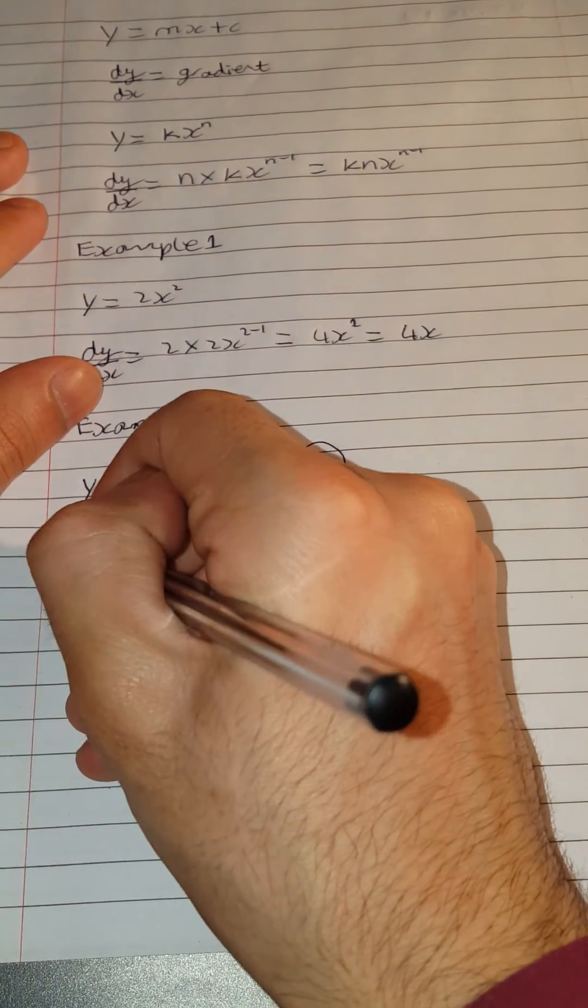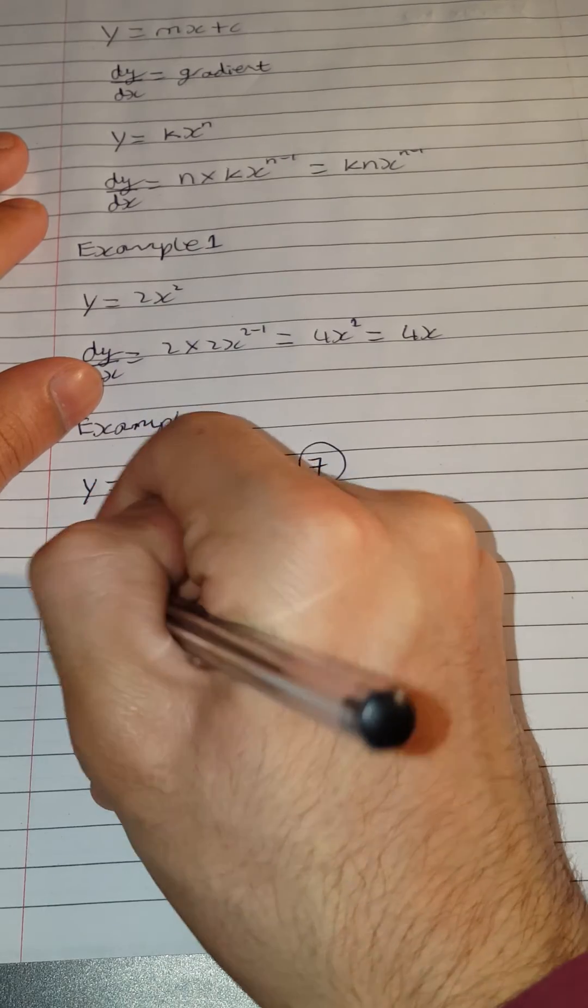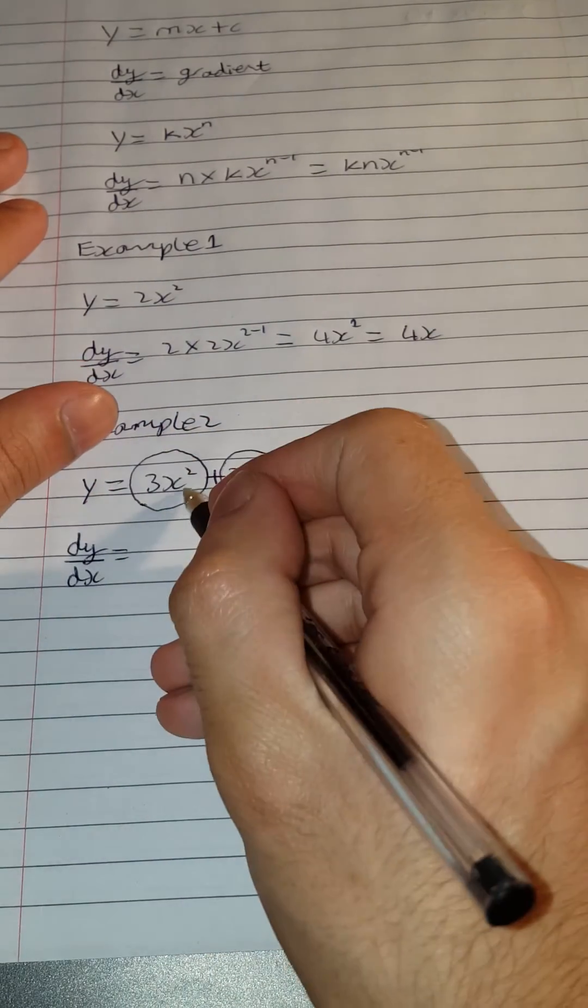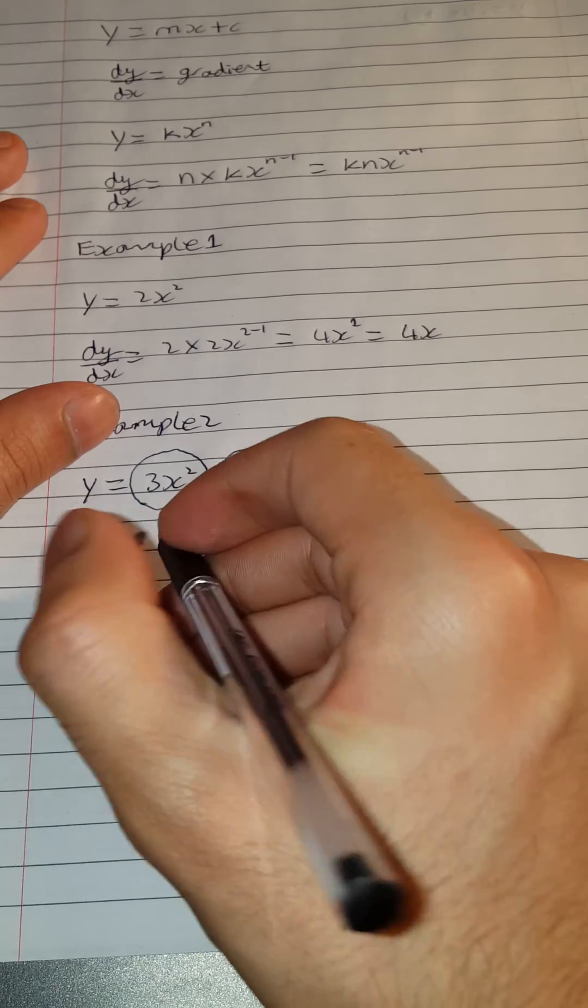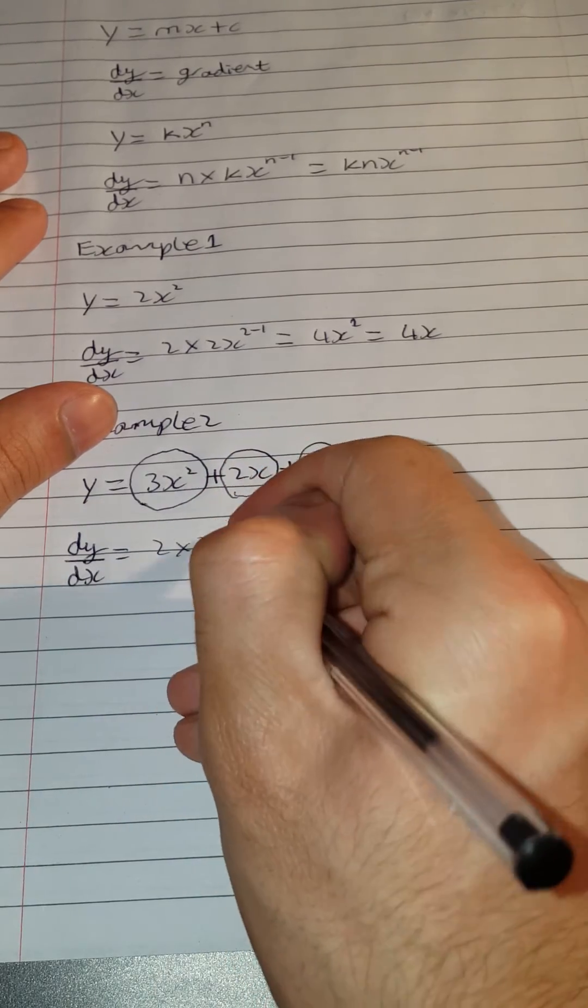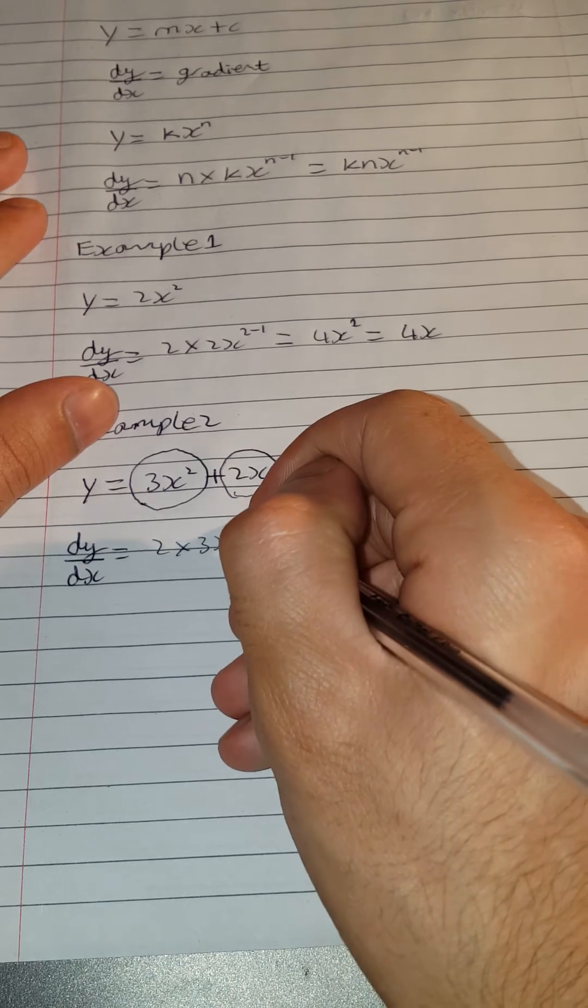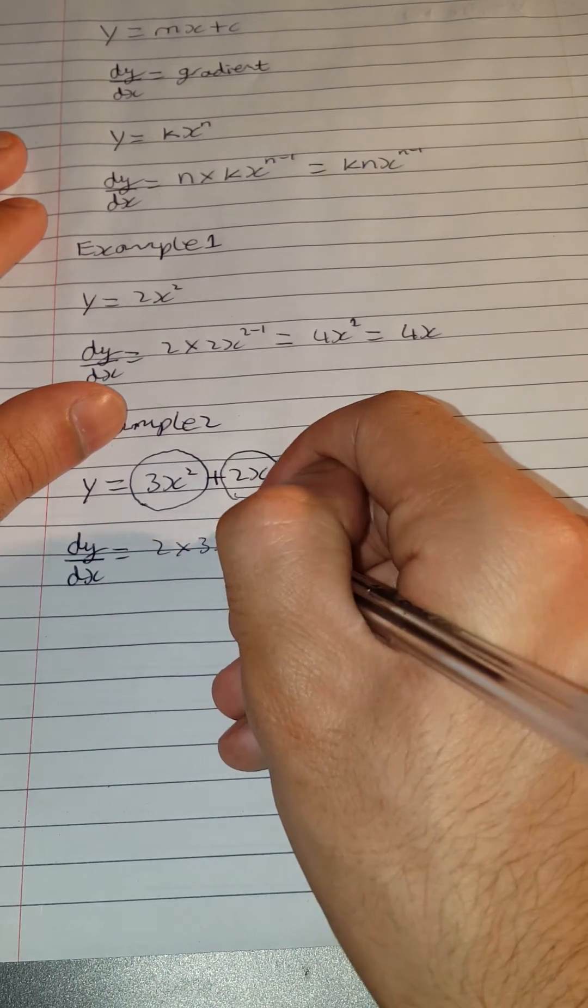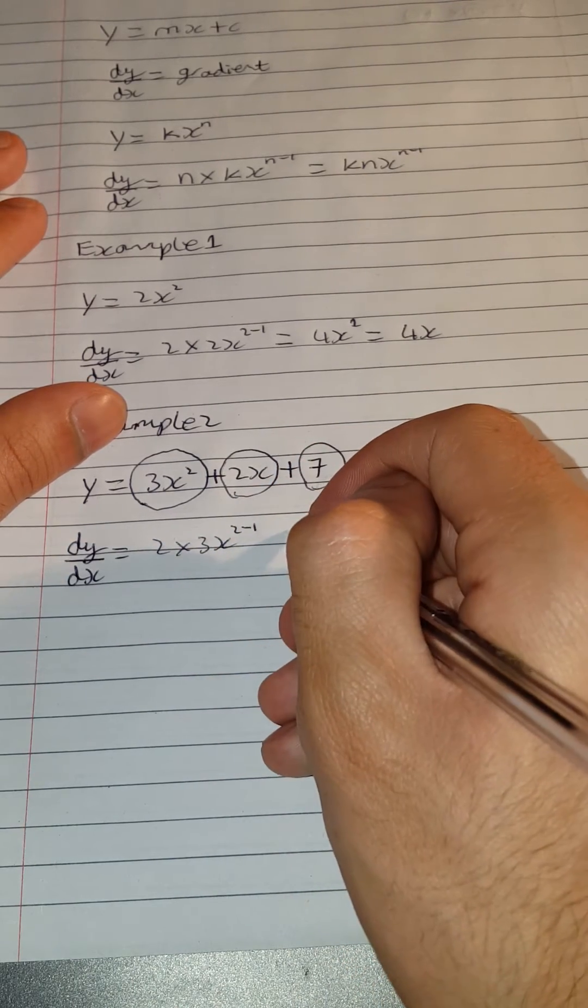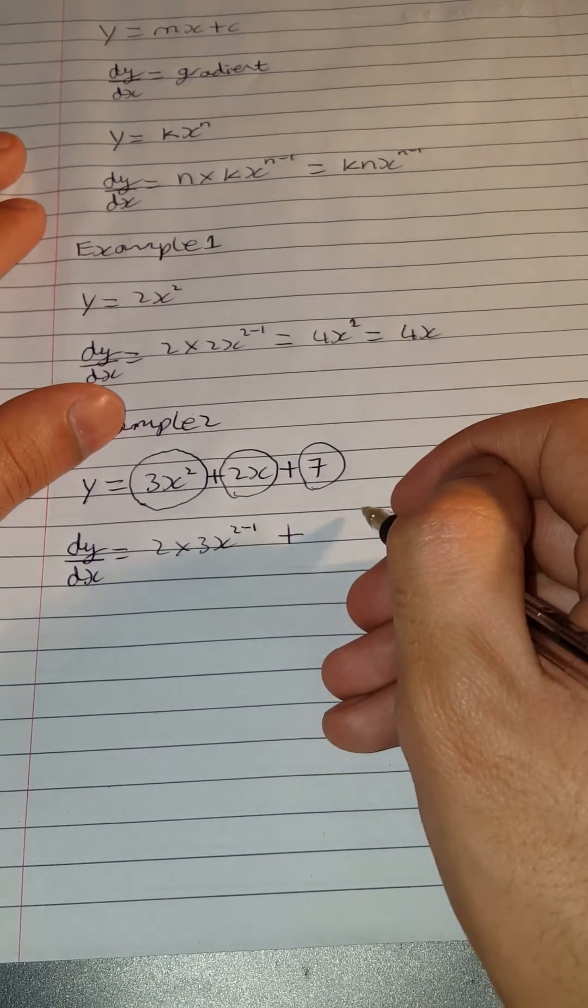Now dy by dx equals, we multiply by 2, the power, 2 times 3x to the n minus 1. So 2 minus 1, let me just write it like this first, plus 2x.